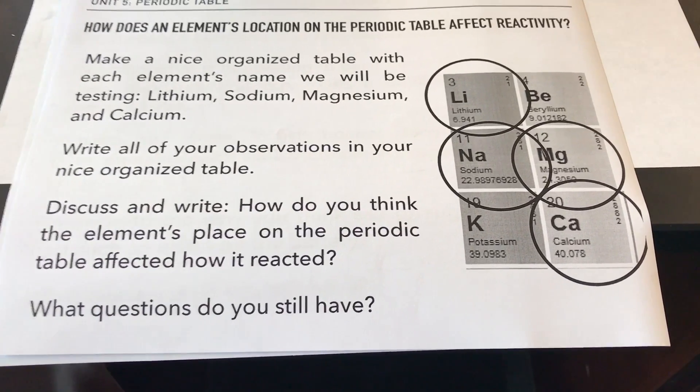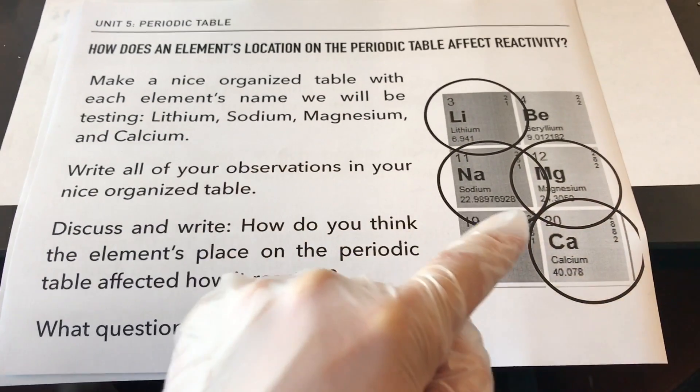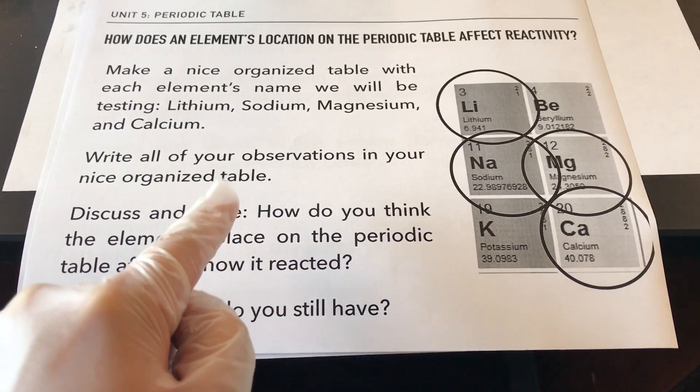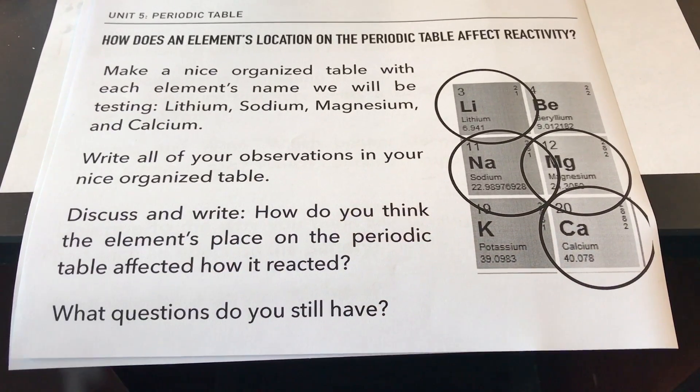Specifically though, we're looking at the ones that are circled. So we're looking at lithium, sodium, magnesium, and calcium. So we're going to be making this table so that you can organize all of your observations.